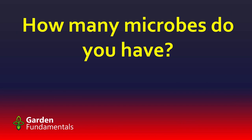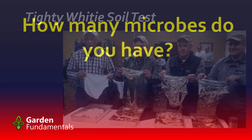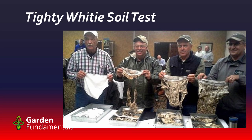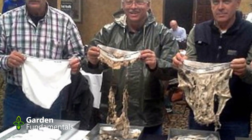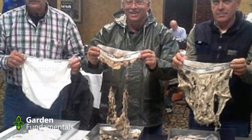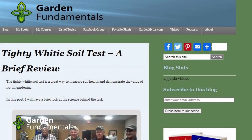So how do we measure how many microbes we have? It turns out it's actually kind of difficult — even laboratories have trouble measuring microbes. But here's one test that's fun and actually works. You go out and get some white cotton underwear, bury it, leave it for several weeks, then dig it up and have a look. If it looks like the intact one on the left, you have very few microbes. The microbes are what degrade the cotton — cotton is a plant material and microbes eat organic material. If you've got a really good soil with lots of microbes, the underwear will be completely falling apart.